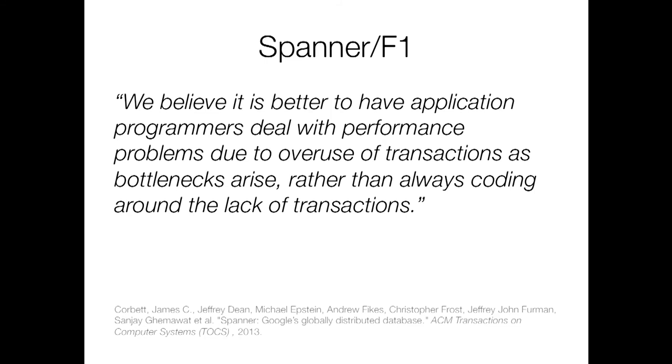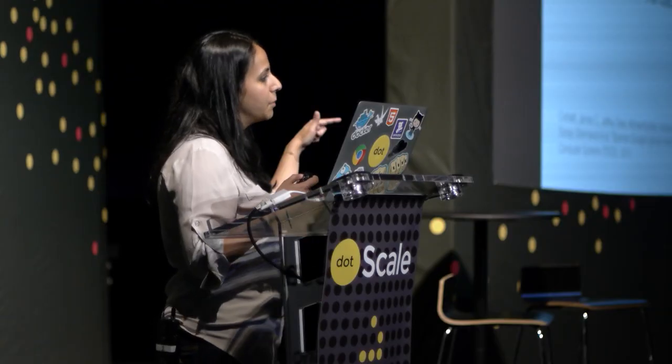That's what I've tried to do with some of my research, and there's a lot of research out there focused on getting correct, strong results with good performance. I really like this quote from the Spanner paper — a giant global distributed database from Google: "We believe it is better to have application programmers deal with performance problems due to overuse of transactions as bottlenecks arise, rather than always coding around the lack of transactions." This paper is very interesting because remember, Google was one of the companies that kicked off this whole NoSQL movement. So it's very interesting that they came around full circle — they decided it was just too hard to program with that model, and really what you should do is not prematurely optimize. Start out with strong consistency and then see what you can do about the bottlenecks as they actually come up.